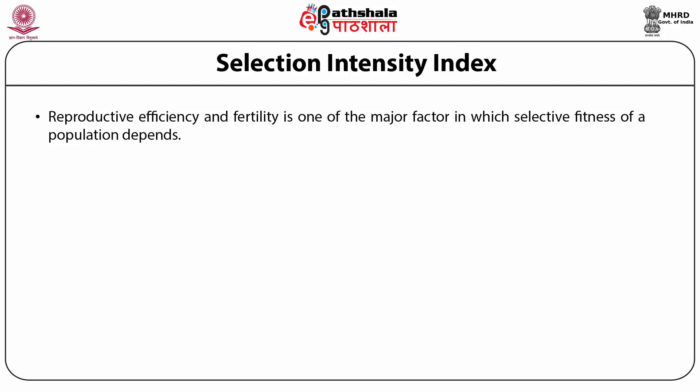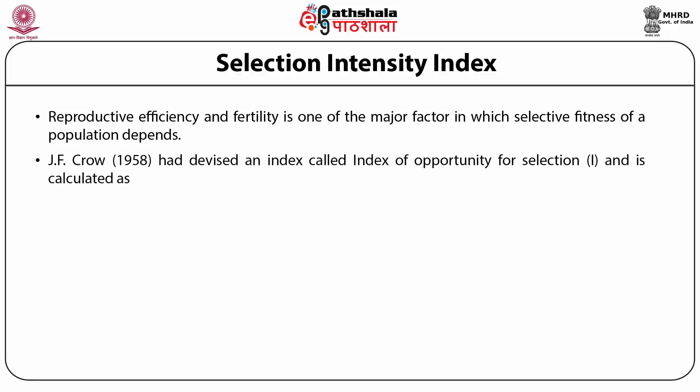Selection Intensity Index. Reproductive efficiency and fertility are major factors on which the selective fitness of a population depends. Total selection pressure of a population is measured in terms of differential fertility and mortality. J.F. Crow devised an index to measure the maximum potential rate of change by taking into account differential fertility and differential mortality. He named it the index of total selection intensity, later changed to the index of opportunity for selection. This measure reflects the maximum opportunity for change in gene frequencies due to selection, not the actual change.